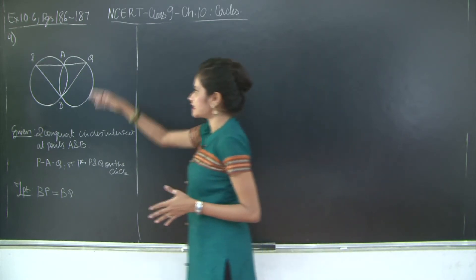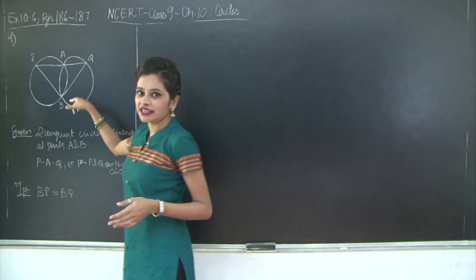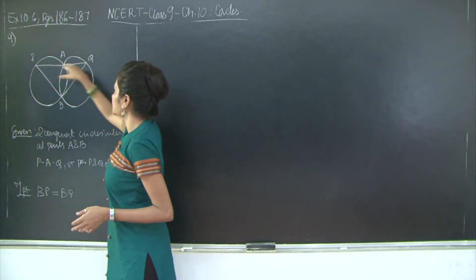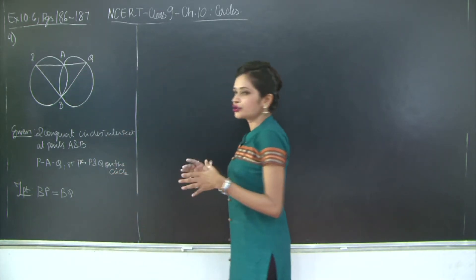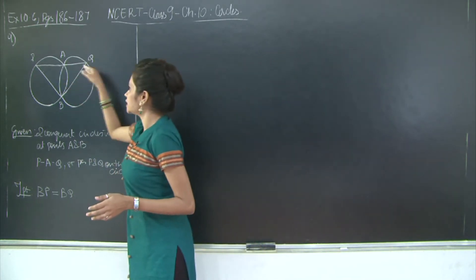You have two circles intersecting each other at points A and B and you have the line segment PQ such that P, A and Q they lie on the circumference of the circle. You need to prove that BP is equal to BQ.